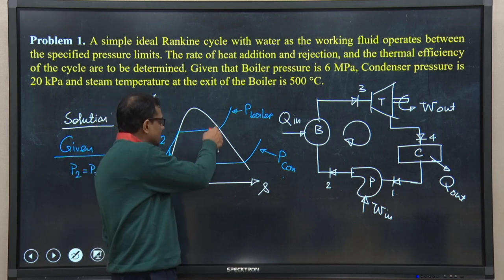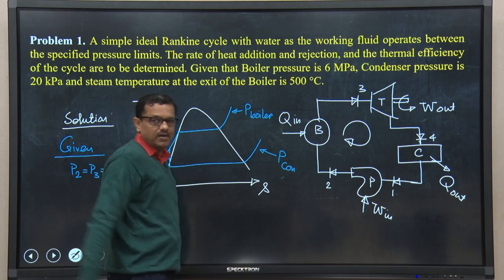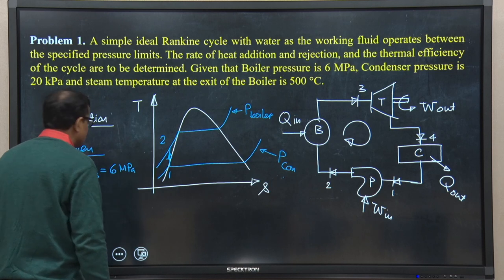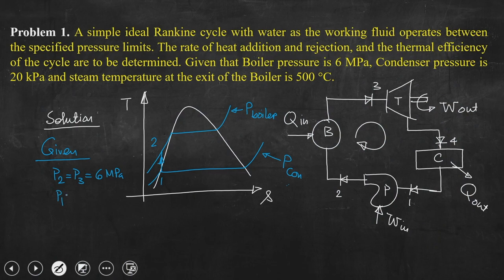Whether point 3 is on the saturated vapor line or in the superheated regime, it will lie on the boiler pressure line. P1 = P4 = 20 kPa (condenser pressure). Since we could not locate point 3 on the T-s plane, we also could not locate point 4 — because process 3 to 4 is isentropic expansion occurring inside the turbine. T3 is given as 500°C.